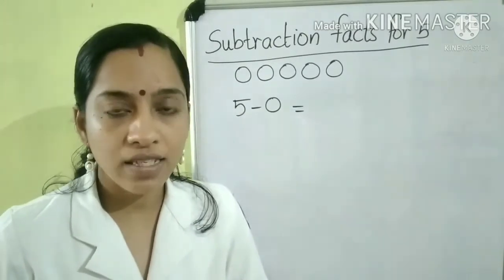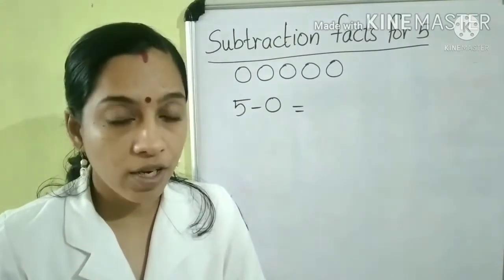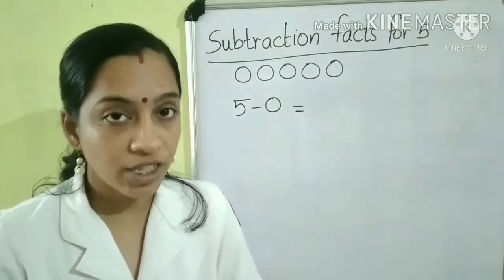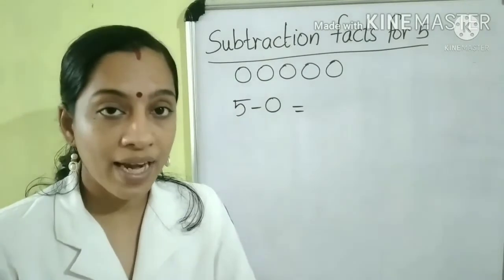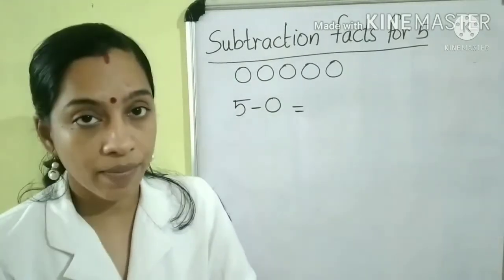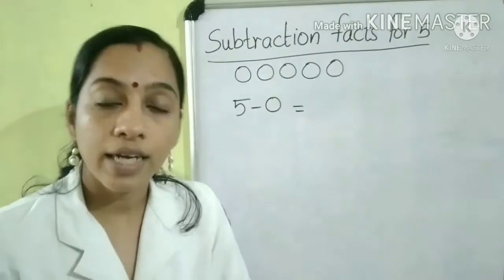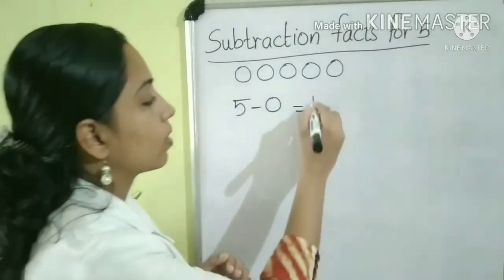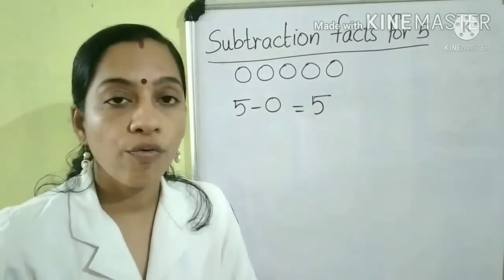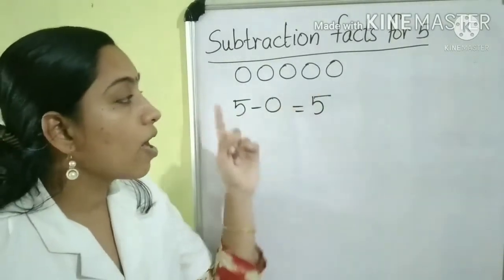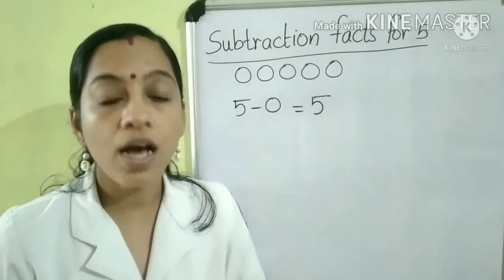Children, what will be the answer when we subtract 0 from 5? We know the answer because we know the property of subtraction. That is, subtracting 0 from a number gives the same number. So, what will be the answer here? It is 5. That is, 5 minus 0 is equal to 5. This is the first subtraction fact for the number 5.